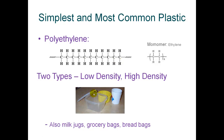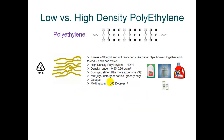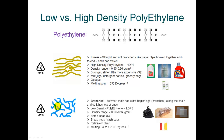There are two types of polyethylene: low density polyethylene and high density polyethylene. Both high density and low density have the same chemical structure. The difference is that with low density polyethylene, if you look at it under a very high powered microscope, what you have is branched chains, whereas high density polyethylene just has straight chains.